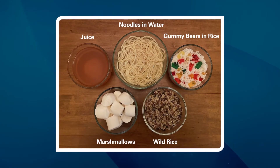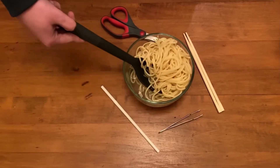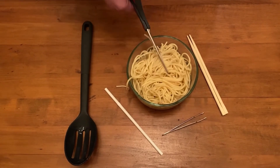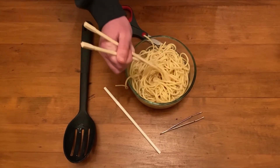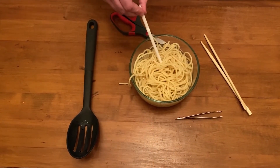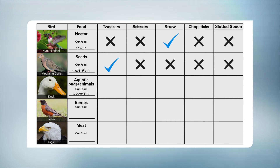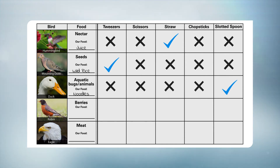We know that ducks spend a great deal of time in the water, so their food is usually found inside the water. The cooked noodles in water best represents aquatic bugs and animals. We have three tools left — use the chopsticks, scissors, and slotted spoon to see which can pick up the noodles. The slotted spoon is closest to the duck's beak or bill. Record your data: write noodles as the food, place X's by eliminated tools, and a check for the slotted spoon.